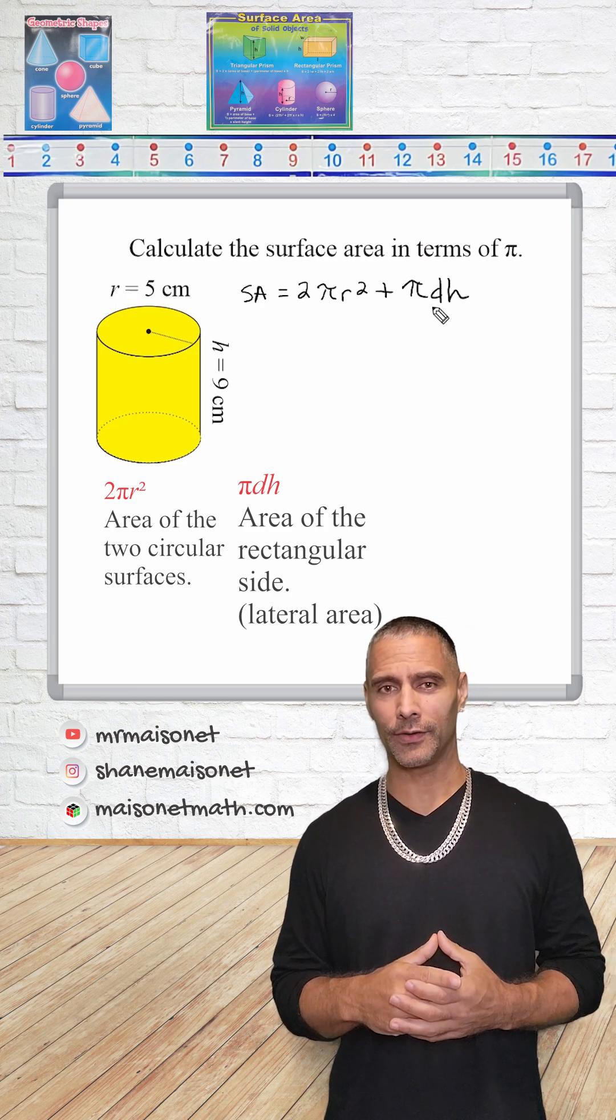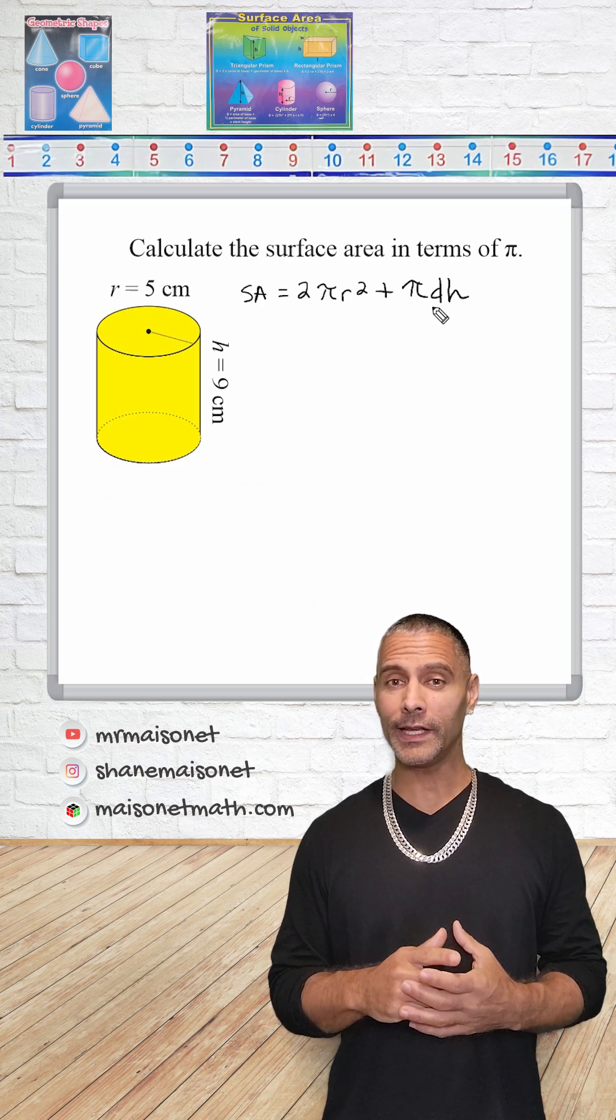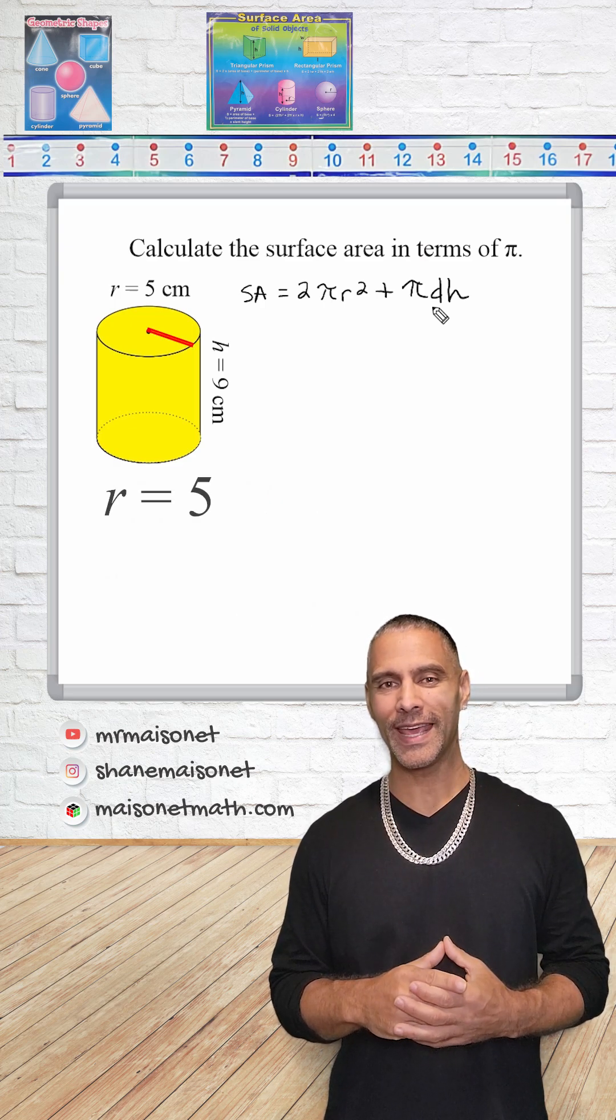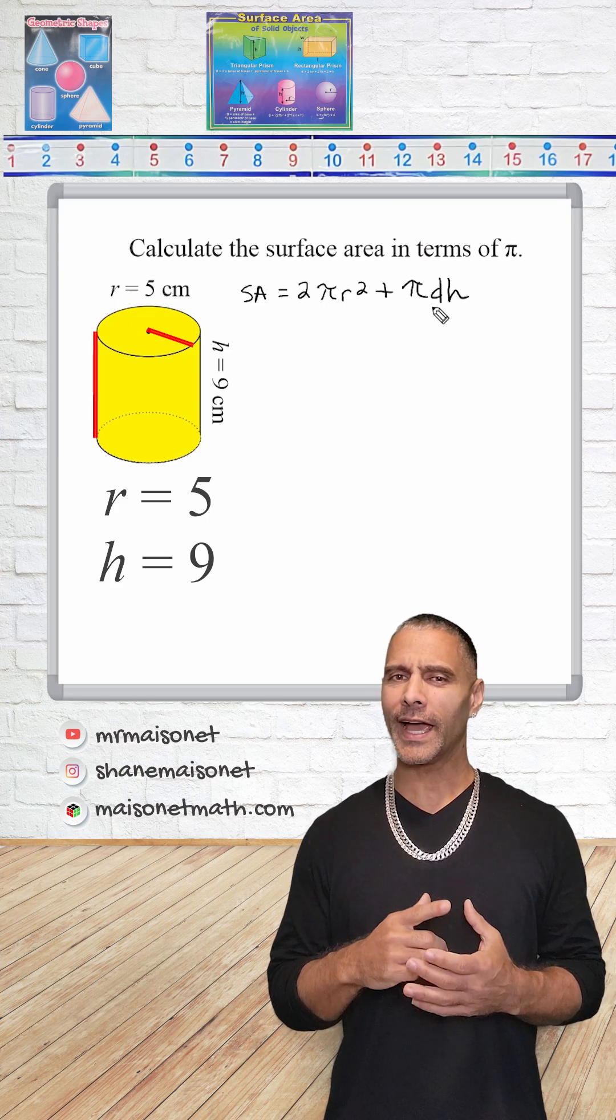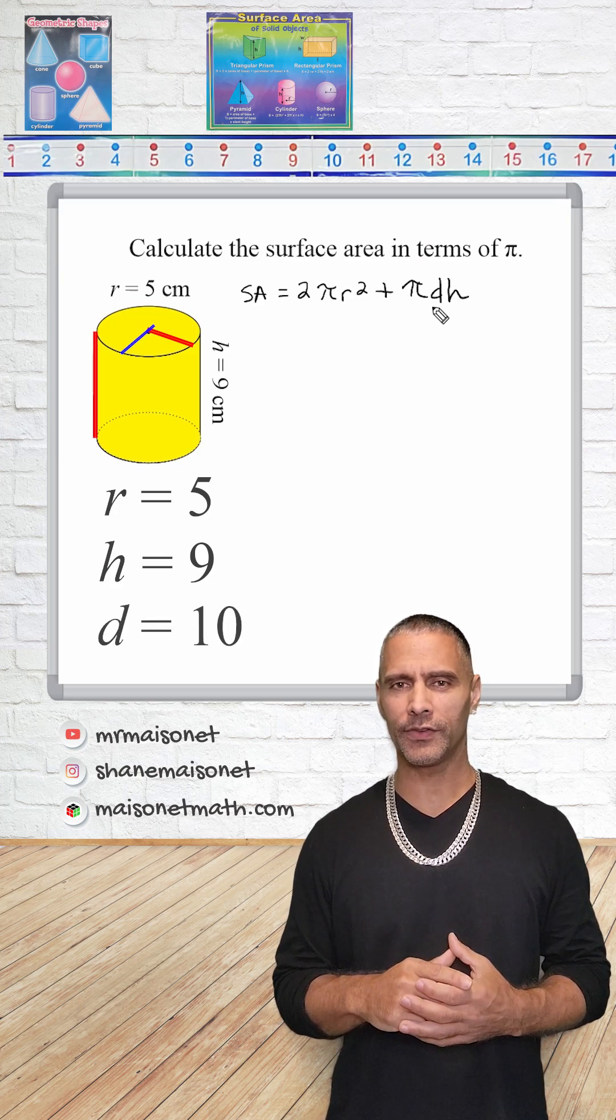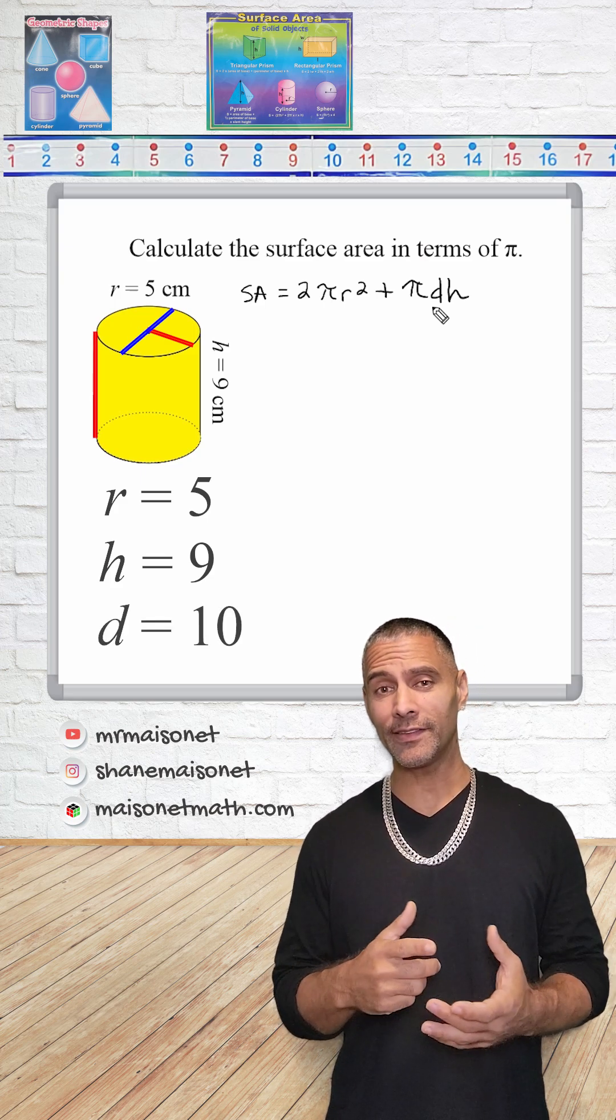All right, so let's plug in the given values. For this problem, the radius given is equal to 5 centimeters, and the height is equal to 9 centimeters. The diameter is always double the radius, so the diameter is equal to 10 centimeters.